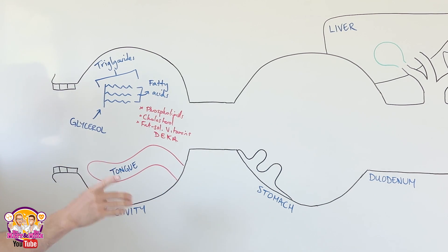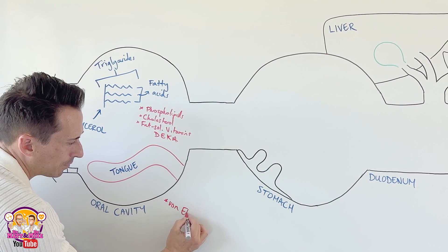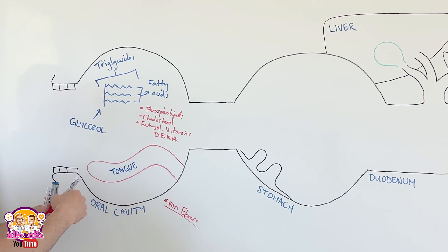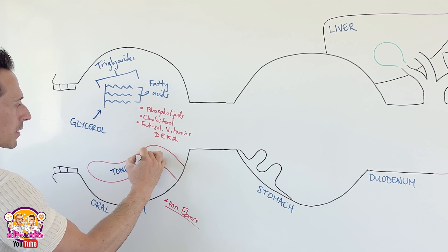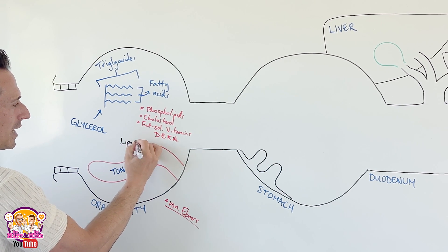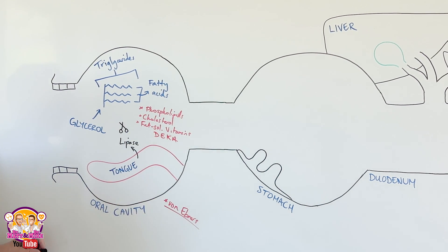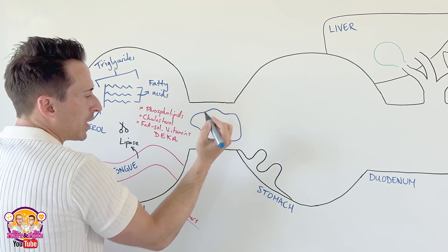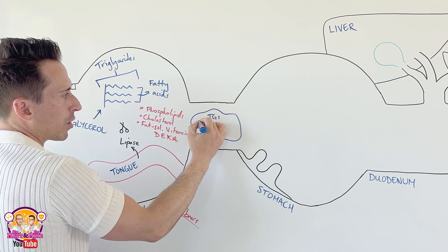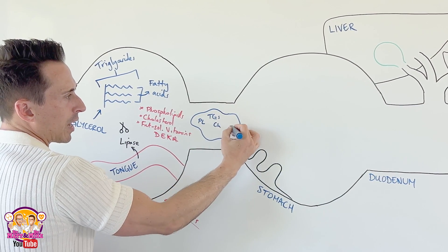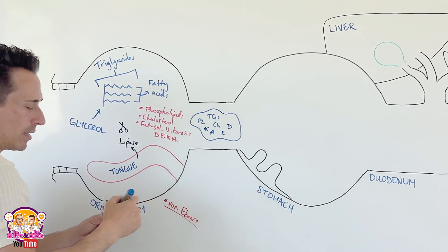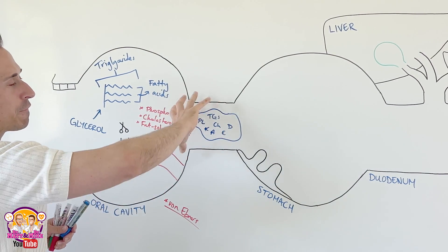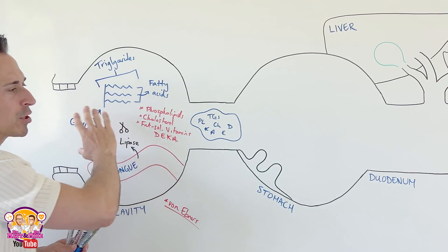The first step is in the oral cavity. We have some glands called von Ebner's glands in the tongue, and what they secrete are lipases — lingual lipase. Lipase is the enzyme, the molecular scissors, that can start chopping off these fatty acids. When we ingest fat, just like oil in a pan, it tends to come together to form globules containing the triglycerides, phospholipids, cholesterol, and vitamins D, E, K, and A. These lipases do a little bit of work chopping them up, but they're not doing a brilliant job.